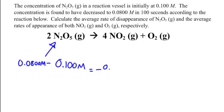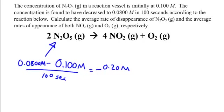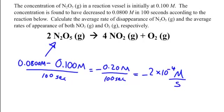That gives us -0.20 molar. We know it's negative because the reactants are decreasing. We divide that by the change in time, and they said it happened in 100 seconds. So -0.20 molar over 100 seconds gives us a change of 2×10⁻⁴ molarity per second, or 0.0002. That's how you find the concentration change — the rate of your reaction.